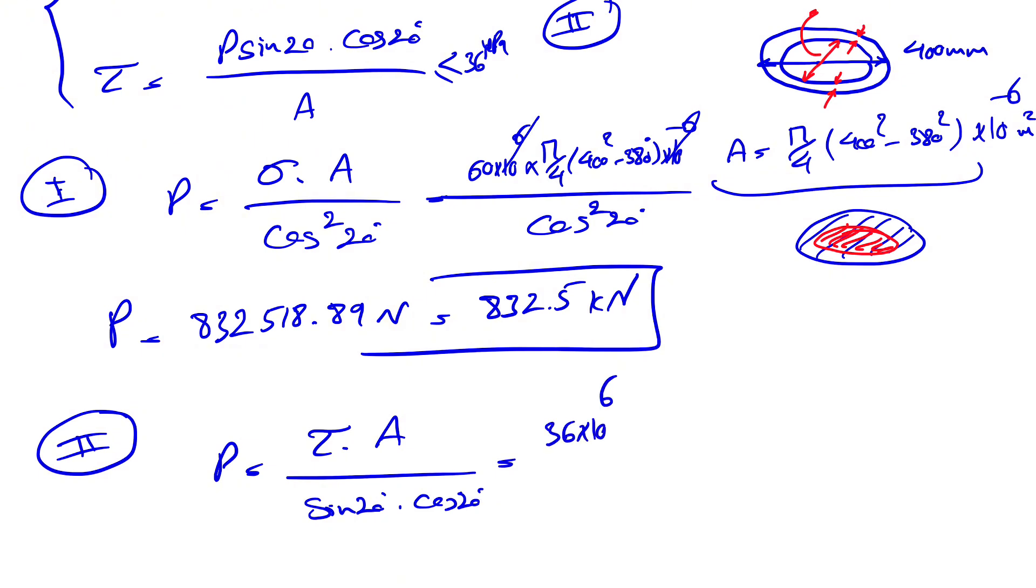So the maximum shearing stress is 36, again, megapascal, so times 10 to the sixth times the same A pi over 4, 400 squared minus 380 squared, 10 to the minus 6 over sine of 20 times cosine of 20.